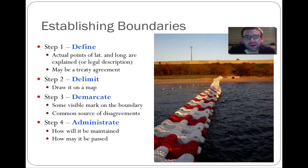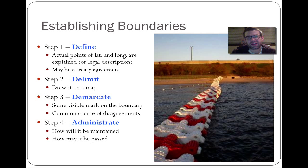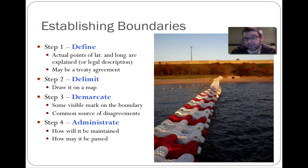When you define boundaries, you're generally looking at what the specific boundaries are between two states or two countries. Historically, those boundaries were sometimes defined by a treaty, and other times specifically defined by latitude and longitude. To delimit boundaries is to actually put them onto a map — not just to have the definition, but to formally place and illustrate those borders on a map.